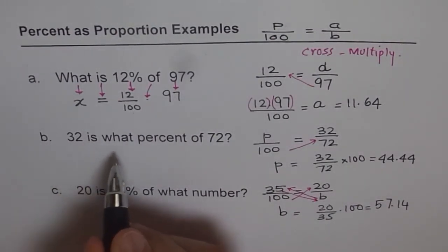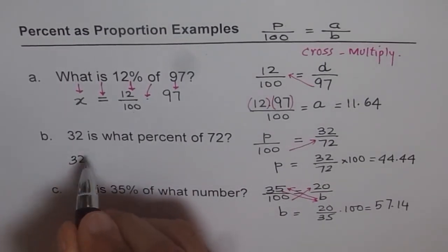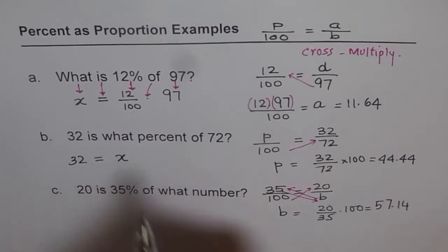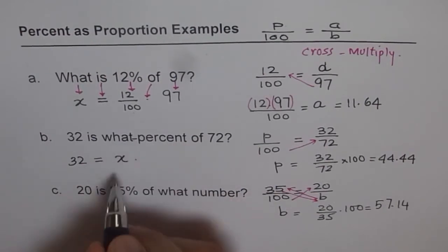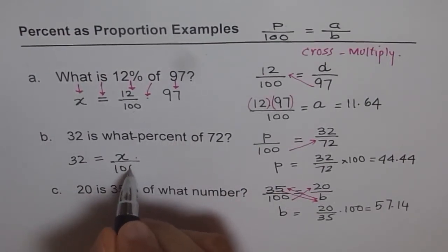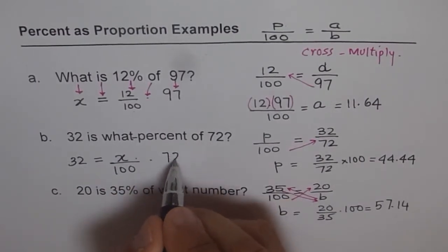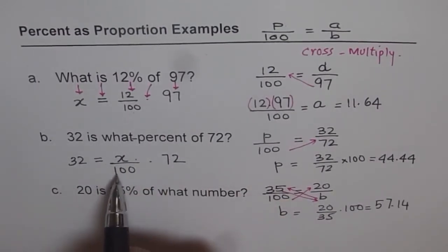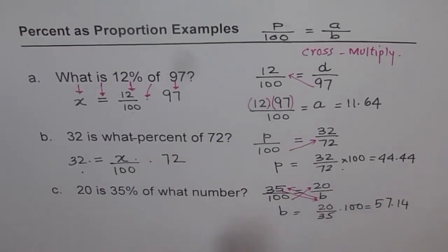32 is what percent of 72. So 32 is the number. Is means equal to. What means x, the variable. Percent means over 100. What percent, so it's kind of what percent, x over 100 percent. Of means multiplication. 72 is the number. So x will be 32 times 100 divided by 72. That's what we got.